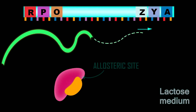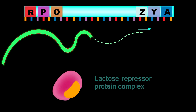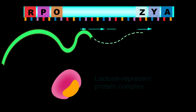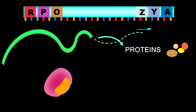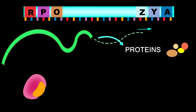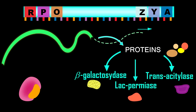The lactose joins to the allosteric site of the repressor protein, changes its shape, and makes a lactose-repressor protein complex. So the polycistronic mRNA chain is continuously produced. This mRNA produces some proteins in the form of enzymes. These enzymes are beta-galactosidase, lac permease, and transacetylase.